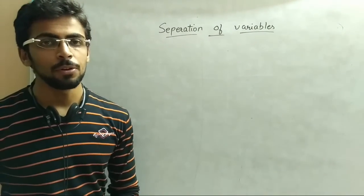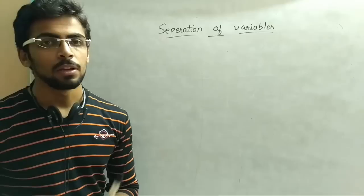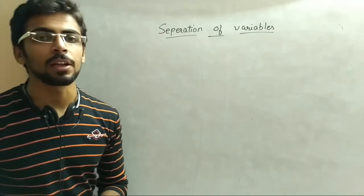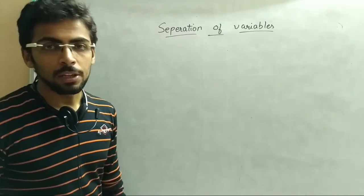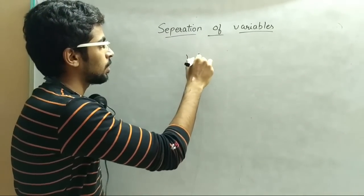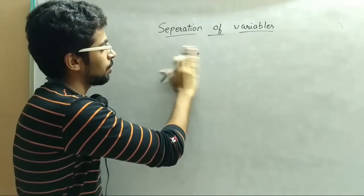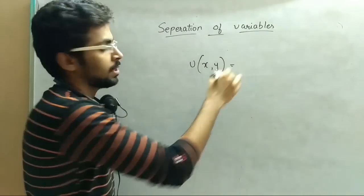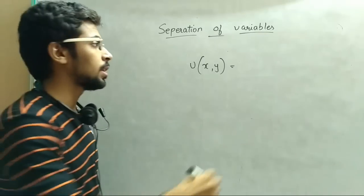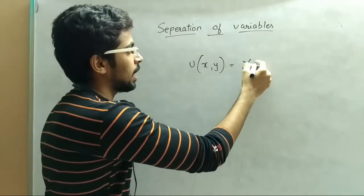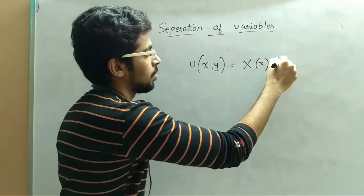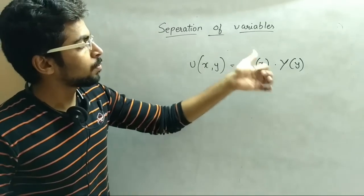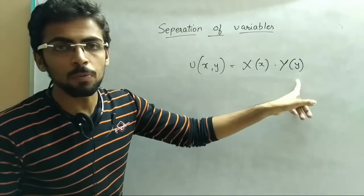In this video I am going to show separation of variables. Using this method we will form the PDE - partial differential equation. So what is this method actually? First of all let us say we have the function u, and u of x and y, and it is X of x into Y of y. That means here are two functions X with respect to x and Y with respect to y.